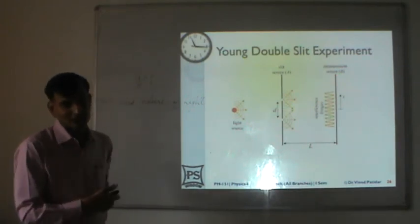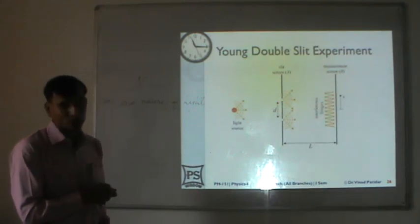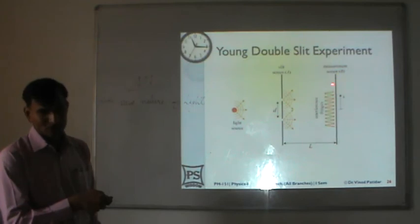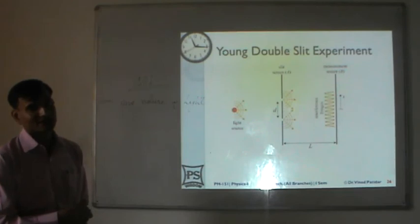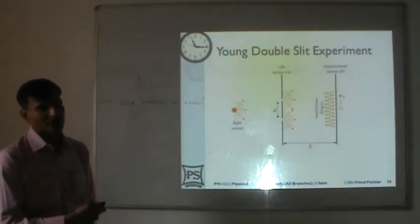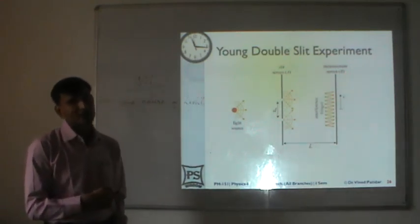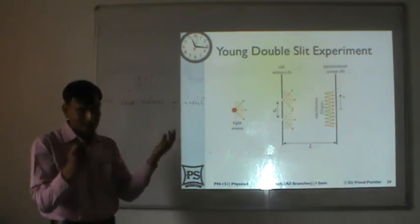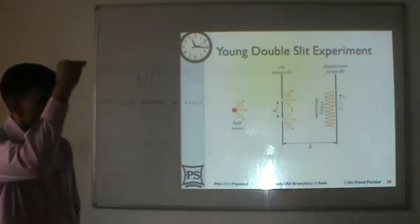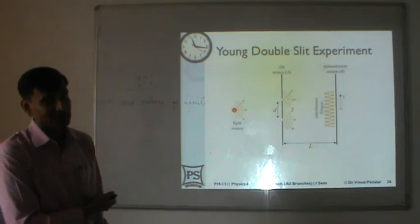At each point you can calculate whether constructive or destructive interference occurs. If the path difference between the wave from S1 and the wave from S2 satisfies n·lambda, there is brightness. If it satisfies (2n+1)·lambda/2, there is darkness. Young initially used pinholes and observed a redistribution of intensity — some points with larger intensity and some with smaller — which is basically interference of light.